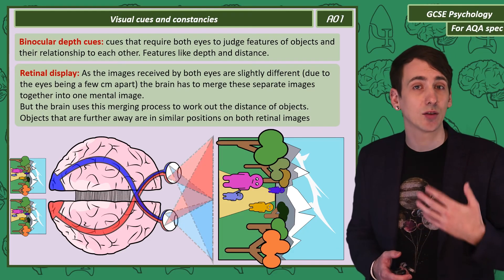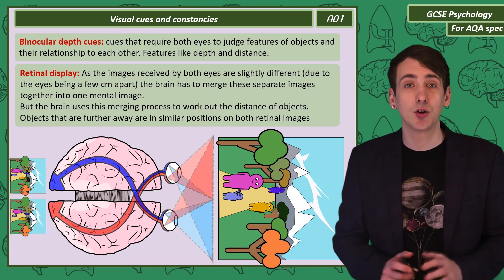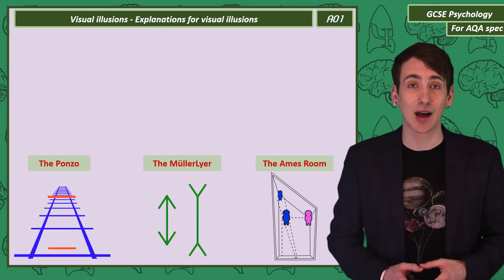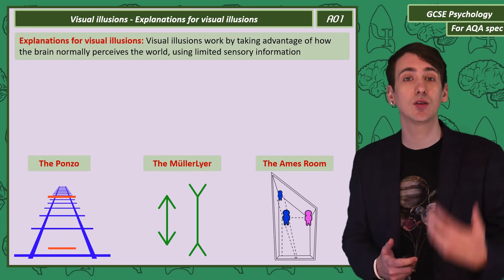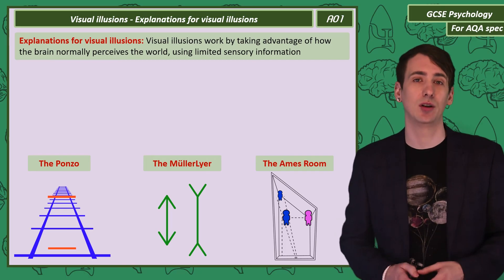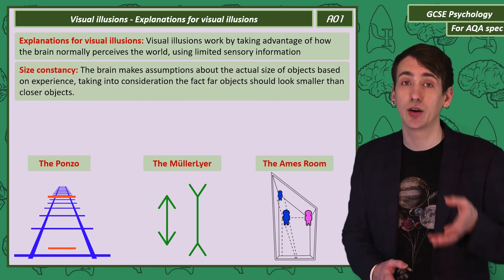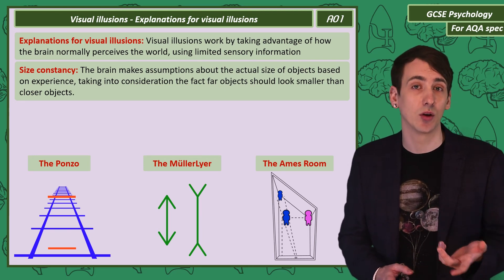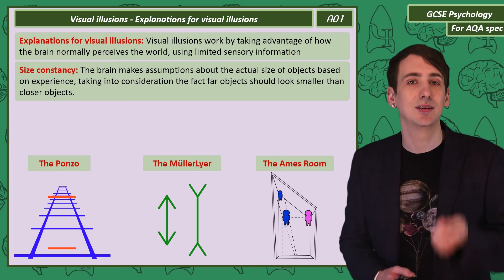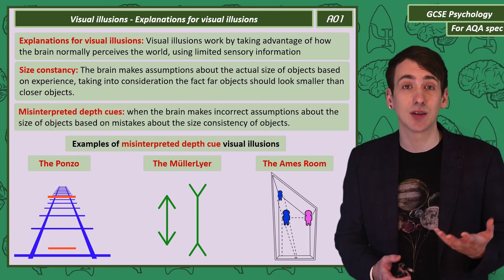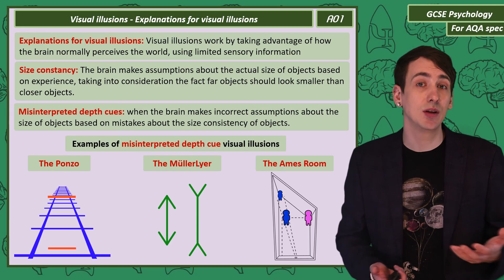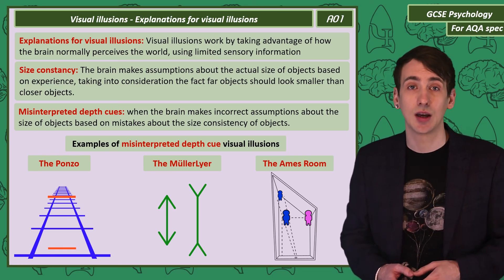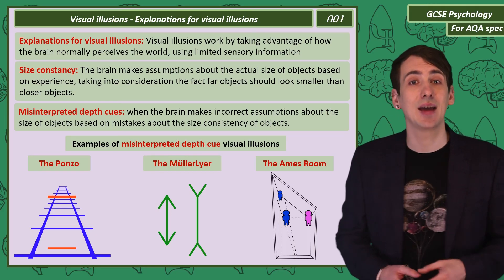So let's match what we've learnt to the visual illusions. All visual illusions take advantage of the fact that the brain's perception of the world is based on assumptions from limited visual information. It makes assumptions on size based on experience and assumes far-away objects are smaller — this is called size constancy. The brain can be incorrect in assuming size constancy because it has misinterpreted depth cues, as we can see in the Ponzo, the Müller-Lyer, and the Ames Room.